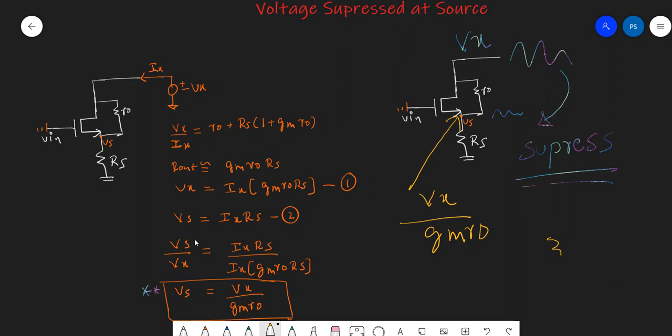Now let us divide equation 2 by equation 1. That is V_s by V_x. V_s is I_x times R_S given by equation 2, and V_x is I_x times g_m times R_O times R_S. If you look at this term, I_x and I_x would cancel, R_S would cancel with R_S. So if I rearrange, we will get the source voltage will be equal to the drain voltage V_x divided by g_m R_O.